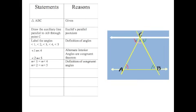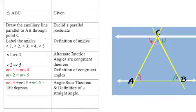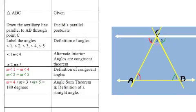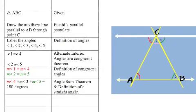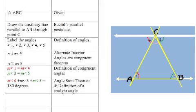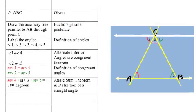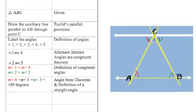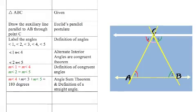Now we have to state that the measures are equal, because we want them to equal 180 degrees. When talking about actual measurement we use the little m to indicate measurement. So the measure of angle 1 equals the measure of angle 4, and the measure of angle 2 equals the measure of angle 5. When we add angles 4, 3, and 5 all together, we know it equals 180 degrees — because that's a straight line, and we drew that line using Euclid's parallel postulate. But we're not really interested in angles 4, 5, and 3 equaling 180 degrees; we're interested in angles 1, 2, and 3 equaling 180 degrees.